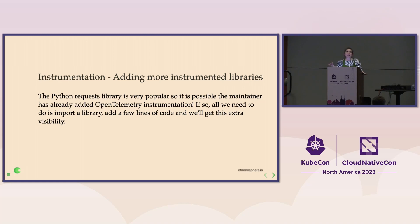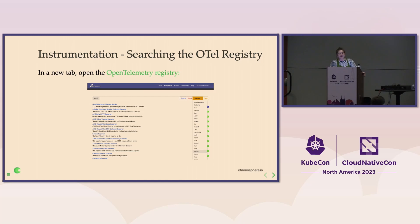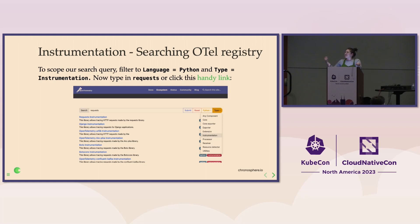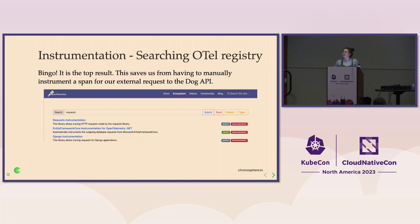All we need to do is import a library, just like we did with the Flask instrumentor, add a few lines of config, and we'll get this extra visibility to our external HTTP requests. You can open up the OpenTelemetry registry — it's a good idea to get comfy exploring the registry to see what's out there. You don't want to instrument more than you have to. Filter down to Python, filter to type instrumentation, search for 'requests,' and — yes, thank you — the top result is the requests instrumentation library. I believe it is Kenneth who runs requests; he's already done the work for us.